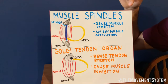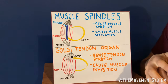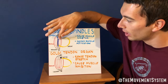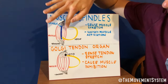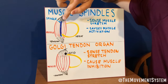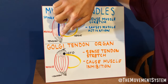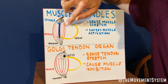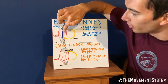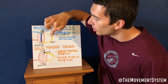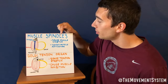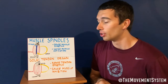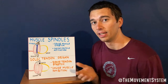Muscle spindles sense muscle stretch. So if a muscle is stretching, that's going to send a signal from the muscle spindle. See this blue right here — that's that sensory muscle spindle right within that muscle belly, that intrafusal fiber. It's sending a signal through a nerve to the spinal cord and then communicating back to the rest of the fibers. We're communicating from the muscle spindle to the muscle fibers of the same muscle. It's going to sense a muscle stretch and then tell the muscle to activate.